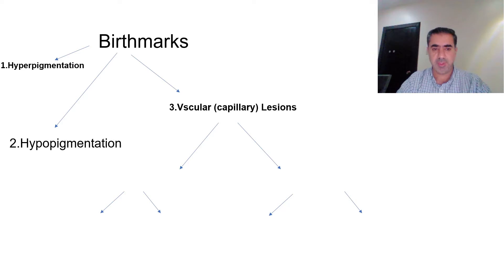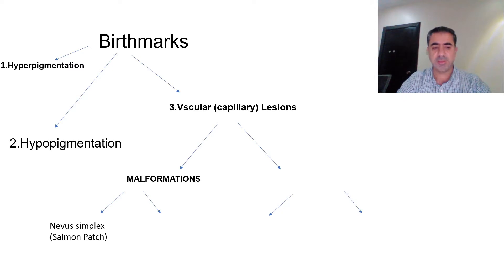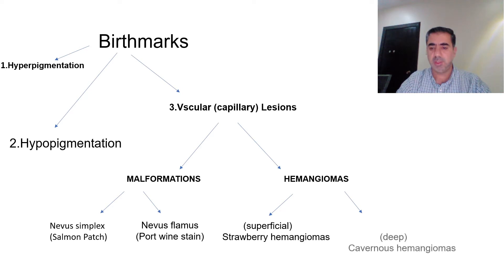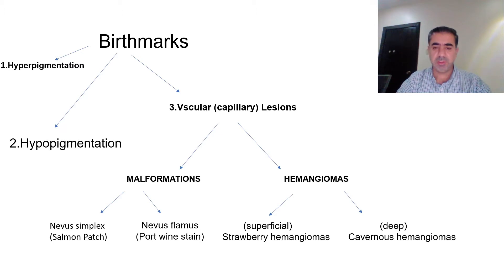Capillary lesions or vascular lesions can be divided into two parts: either malformations, which includes nevus simplex (the salmon patch) and nevus flammeus (the port wine stain) — the appearance is the same but the site is the difference — and hemangiomas, which has two parts: either the superficial one, which is the strawberry hemangioma, or the deep one, which is the cavernous hemangioma.